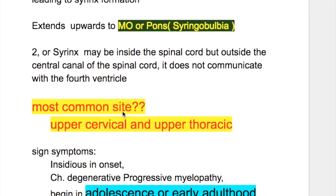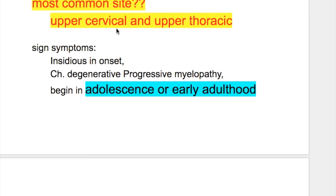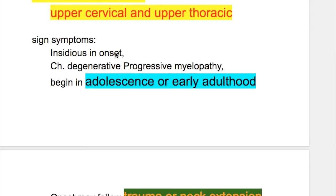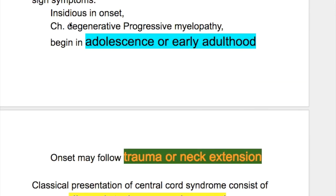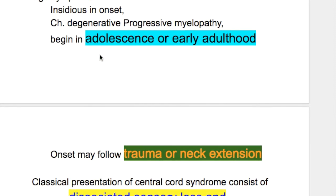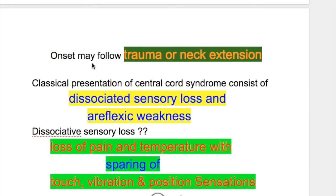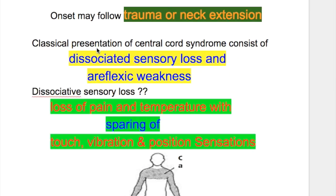The most common site of syringomyelia is the upper cervical and upper thoracic regions. The signs and symptoms are insidious in onset and cause chronic, degenerative, progressive myelopathy. It begins in adolescence and early adulthood. The onset may follow trauma or neck extension. The classical presentations are those of central cord syndrome.